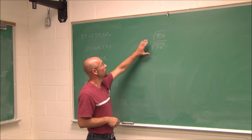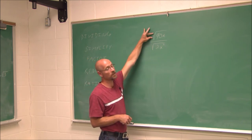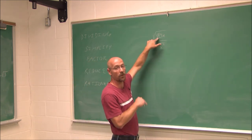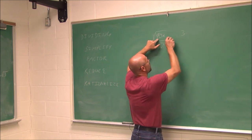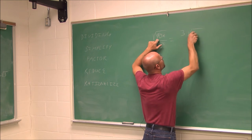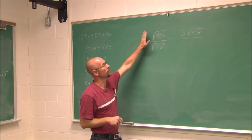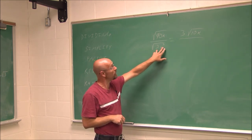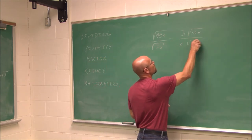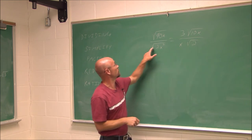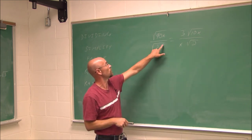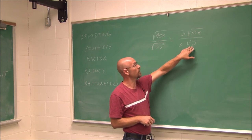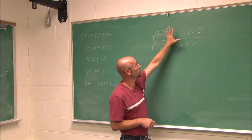Let's take a look at one more example. If we're going to simplify this, I'm going to simplify the numerator first. I recognize a factor of 9 — I know 9 is a perfect square, so I can pull it out as 3. In the denominator, we have the square root of 2x². I can simplify that by pulling out an x — the square root of x² is just x, because a square cancels a square root. So now we've done a little bit of simplifying.